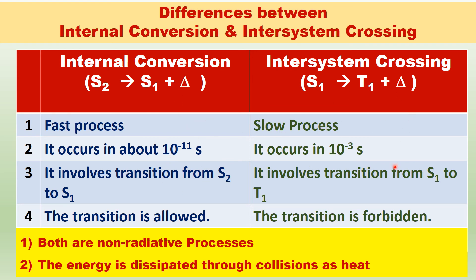Inter-system crossing is a slow process. It involves the transition from S1 to T1. The transition from singlet to triplet is forbidden, which is why this is a slow process. It occurs in about 10 to the power of minus 3 seconds.